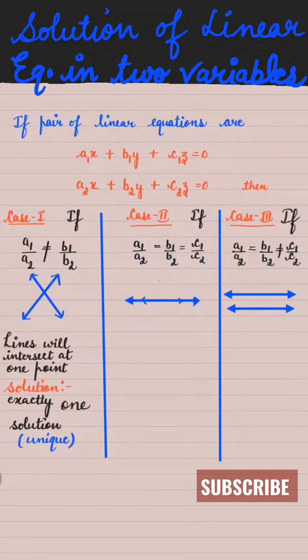Then lines will be coincident, means they will overlap each other, and it has infinitely many solutions. Now Case 3: if a1 over a2 is equal to b1 over b2 is not equal to c1 over c2.